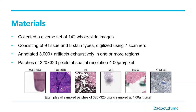To train the artifact segmentation module we collected a diverse set of 142 whole-slide images. This dataset consisted of nine different tissue types and eight different staining types, and the whole-slide images were digitized using seven different scanners. In total we densely annotated more than 3,000 artifacts in one or more regions of the whole-slide images. Due to the extremely high resolutions of these images, we sampled smaller patches, which were then fed through our artifact segmentation module for training.